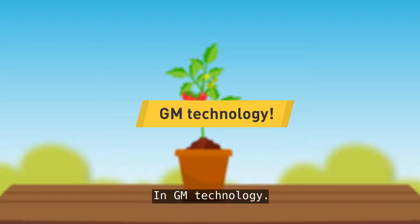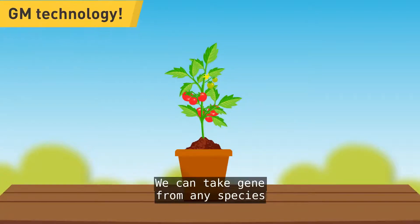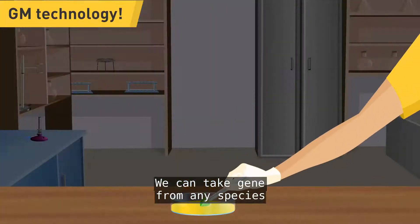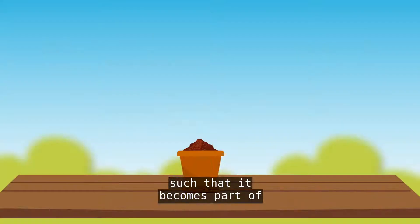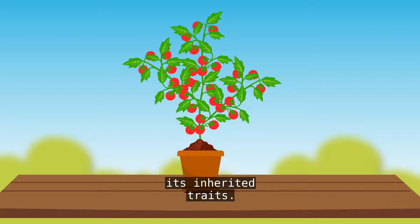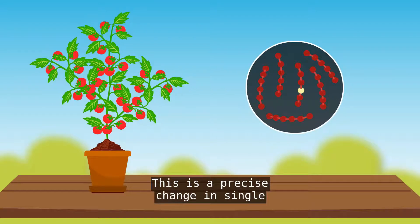In GM technology, we can take genes from any species of plant or bacteria and insert them into the genome of the crop, such that they become part of its inherited traits. This is a precise change in a single generation.